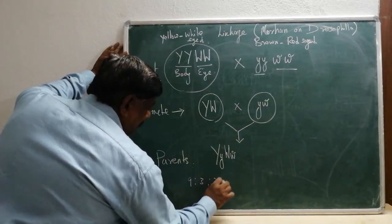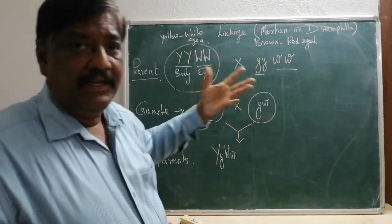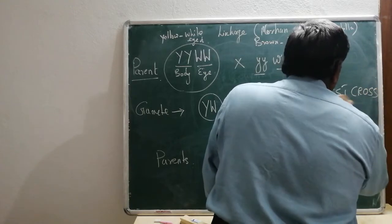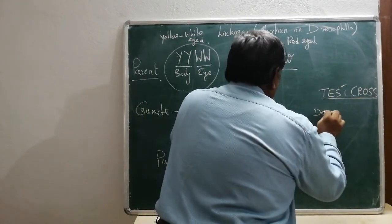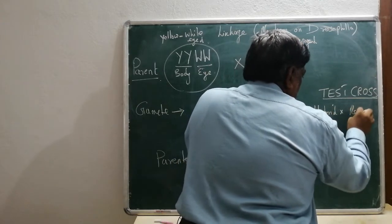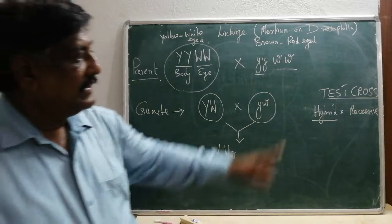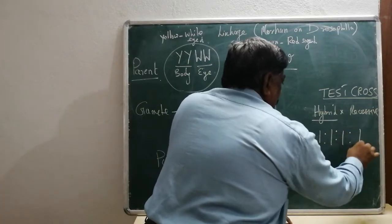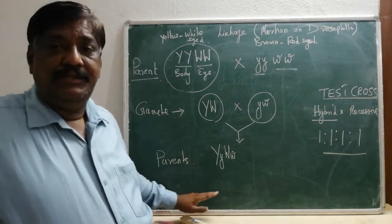Actually, if he had done the experiment like Mendel, the result should have been 9:3:3:1. But he did not get that result. So he went for a test cross. What is a test cross? When a hybrid is crossed with a recessive — that is called a test cross. We have seen this already. And the expected result of a test cross is always 1:1:1:1, instead of 9:3:3:1.